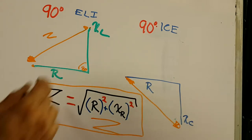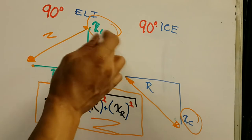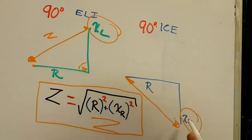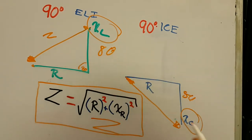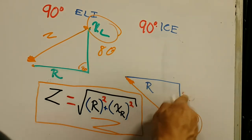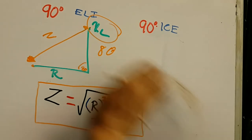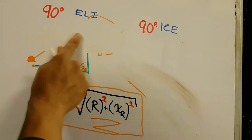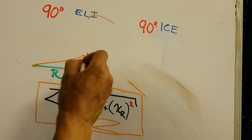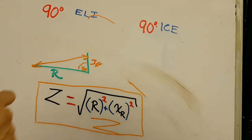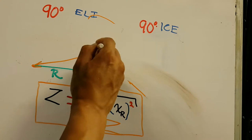In a system with both inductors and capacitors, one will be larger and that determines the character of the circuit. For example, if inductive reactance is 80 ohms and capacitive reactance is 50 ohms, we subtract 50 from 80 to get 30 ohms. That net 30-ohm value is placed into the Pythagorean formula as the reactive side, and we treat the overall system as inductive with that reduced reactance value.